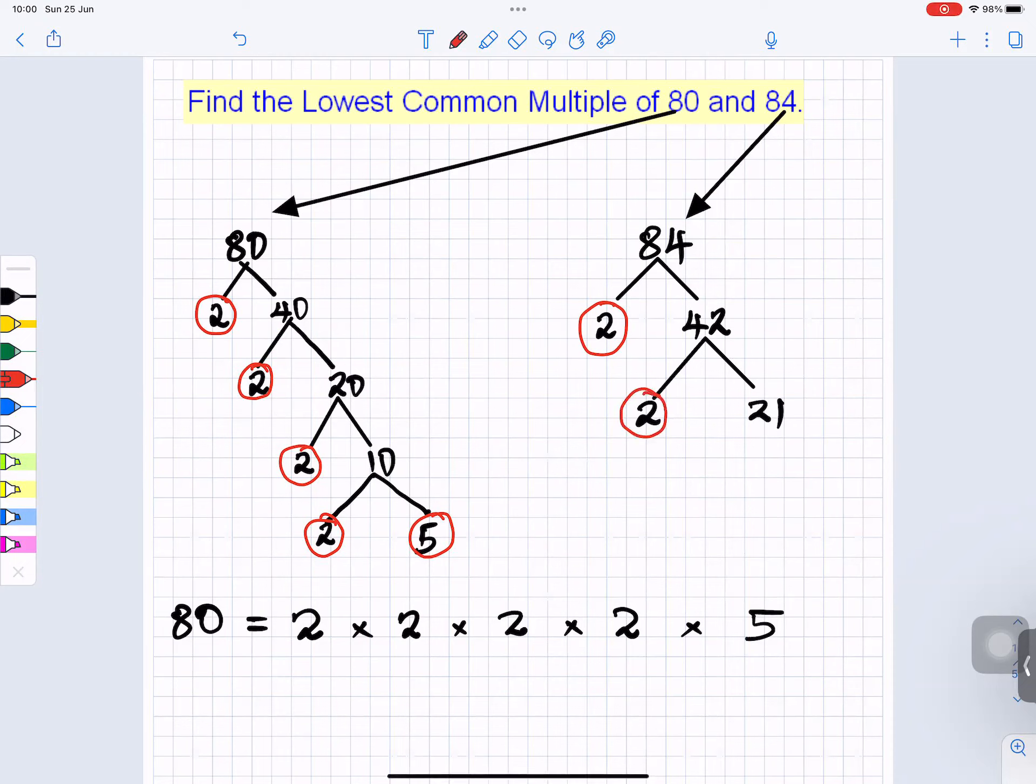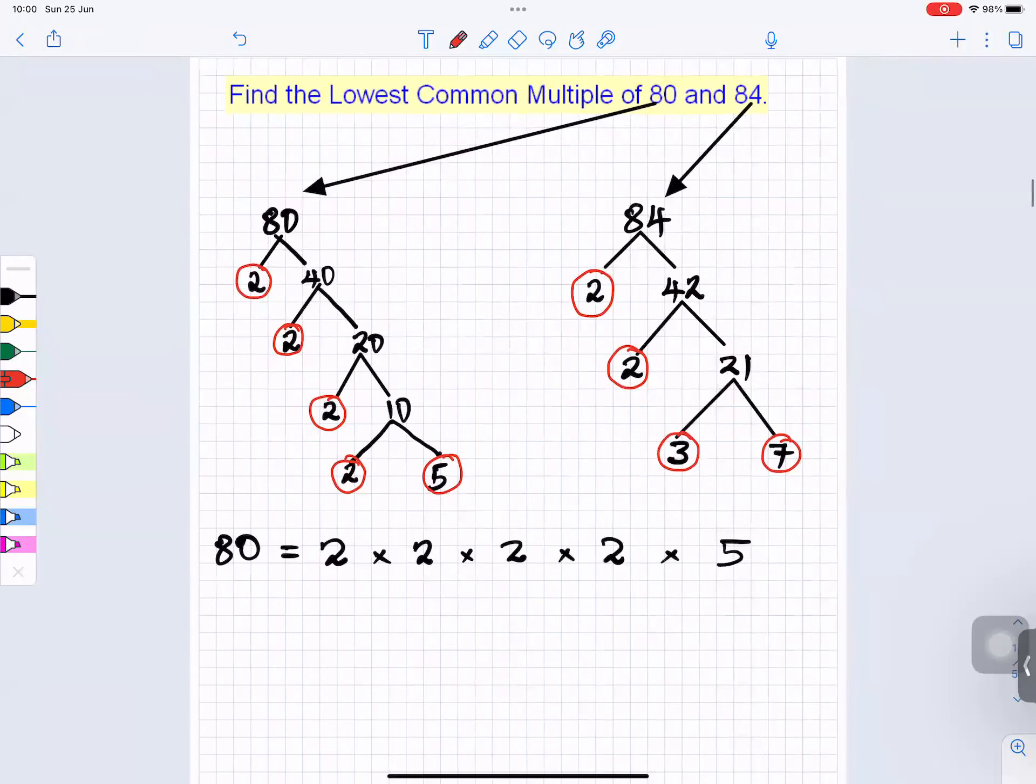So now we've got 2 and 21. Now which two prime numbers can divide into... 3 and 7. 3 is a prime number, 7 is a prime number. So once I've split them, I would write 84 as 2 times 2 times 3 times 7.